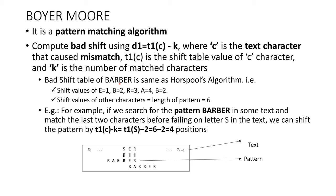B is at a distance of 2, so B equals 2. R is at a distance of 3, so R equals 3. A is at a distance of 4, so A equals 4. But B was already calculated, so B remains 2. This is how we used to calculate the shift table for a pattern in the Horspool algorithm.